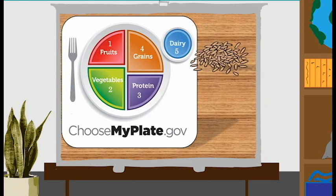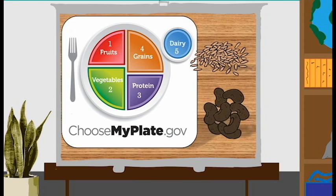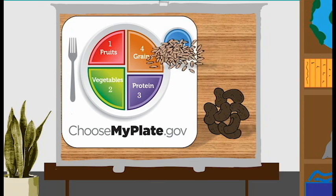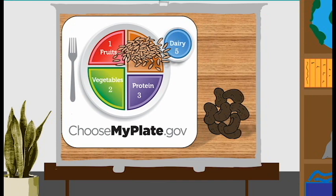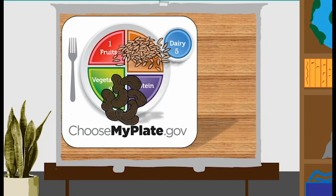Next up, we have some brown rice and some beans. Okay. Think about where the brown rice should go. Have you picked? Number four. Very good. Brown rice goes in the grain section. And what about the beans? The beans go in the vegetables and the protein section.